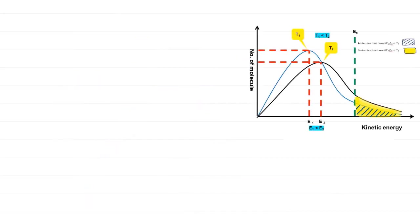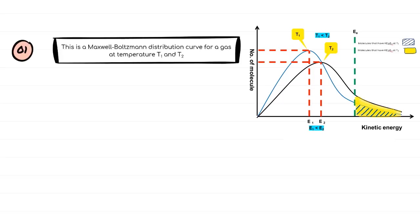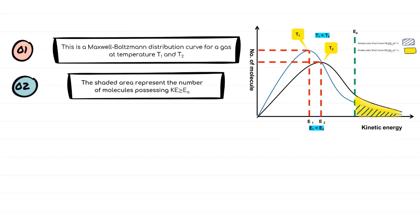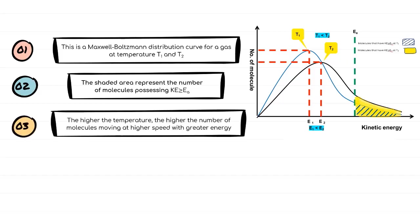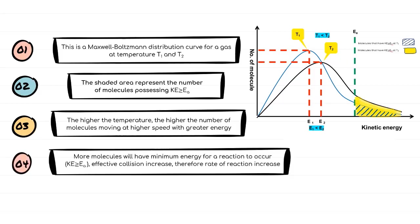We can explain the effect of temperature on reaction rate by first identifying this as a Maxwell-Boltzmann distribution curve for gas at temperatures T1 and T2. The shaded area represents the number of molecules possessing kinetic energy greater than or equal to activation energy. At higher temperature, more molecules move at higher speed with greater energy. Therefore, when more molecules have the minimum energy for reactions to occur, effective collisions increase and the rate of reaction increases.